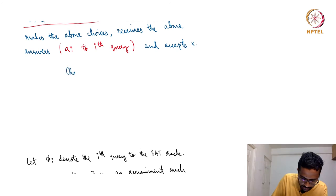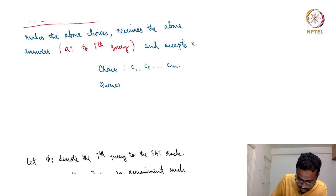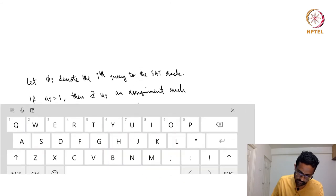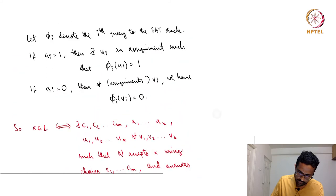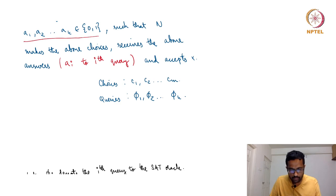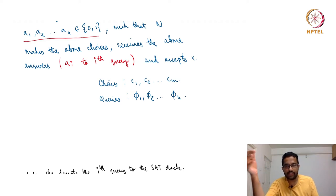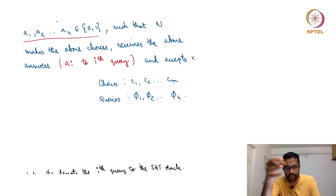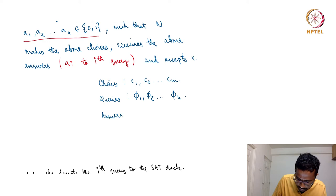N makes choices C_1 through C_m and queries phi_1, phi_2, ..., phi_K to the SAT oracle. Each query is an instance of satisfiability — a Boolean formula. Let the queries be phi_1 through phi_K and the answers be A_1 through A_K. The queries are fixed by the choices, and the answers are decided by the oracle truthfully.